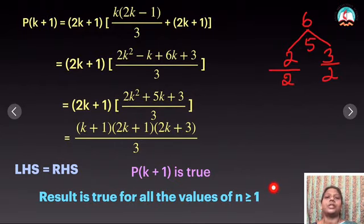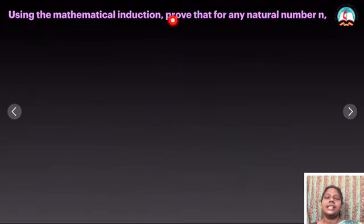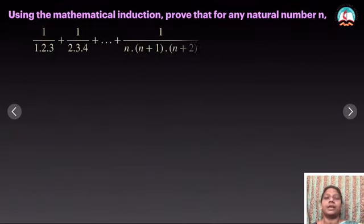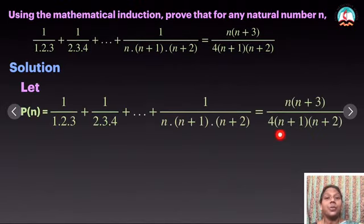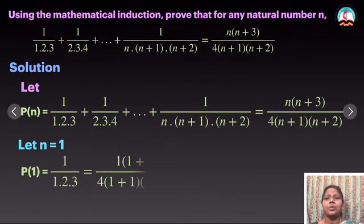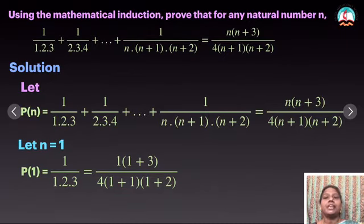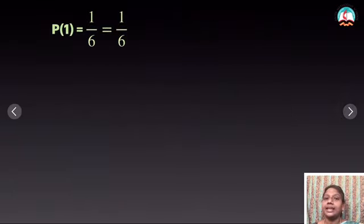So the same procedure — we are going to do one more problem. Using mathematical induction, prove that for any natural number n: 1/(1·2·3) + ... is the given expression. What is the first step? I have to take P(n) equal to the question. Now, at n=1, substituting n=1, the first term is 1/(1·2·3). Substituting n in the RHS, I get 1/6 equal to 1/6. So LHS and RHS are equal. Therefore P(1) is true.